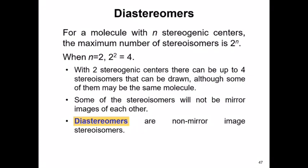If we have a molecule with two chiral centers, or two stereogenic centers, then the maximum number of stereoisomers would be four. The first pair — A and B — are enantiomers of each other. Then we have a second pair, C and D, which are also enantiomers of one another. But then the first pair and the second pair are non-mirror images of each other, and so they are actually diastereomers of one another.